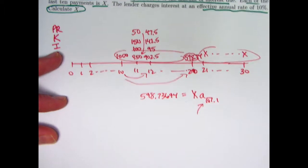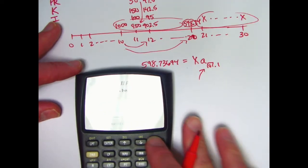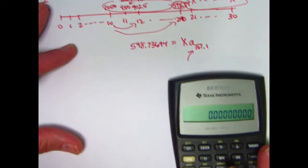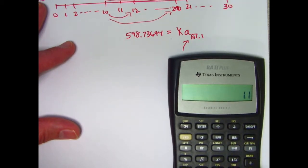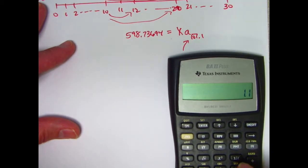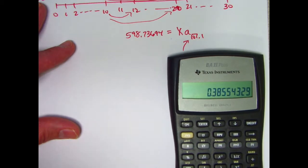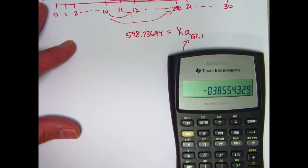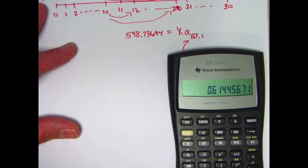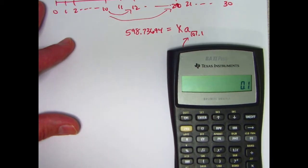Figure out A-10 at 0.1. That's something you should be able to do at this point, just with your calculator. Take 1.1. Take its reciprocal. That's V. Raise that to the 10th power. Subtract from 1. And then divide by I. Divide by 0.1.